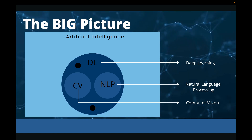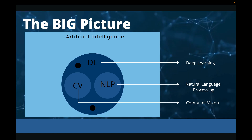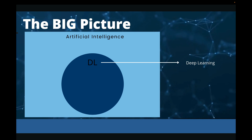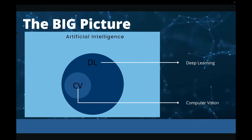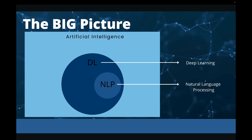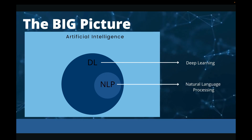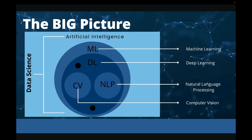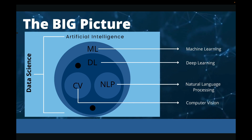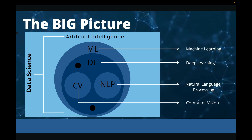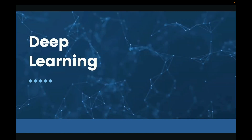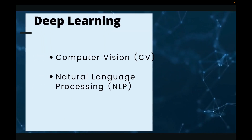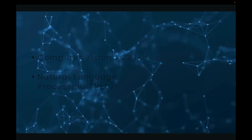We first started with machine learning and we got through that. And then we said that we're going to focus on deep learning. Inside deep learning, we said we will first treat computer vision, and then after that, we treat natural language processing. In deep learning, we have two main areas that we're going to focus on: computer vision and natural language processing.